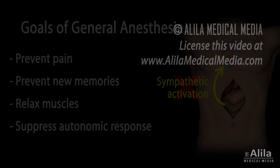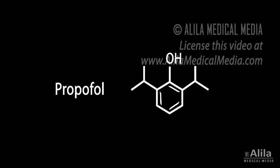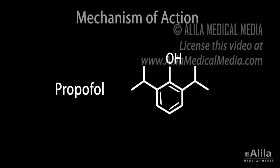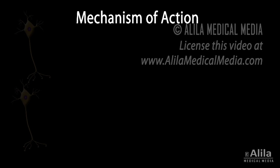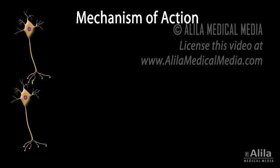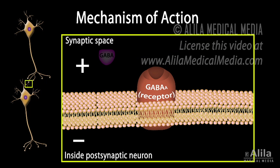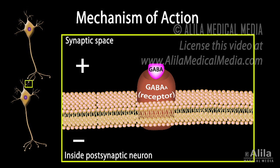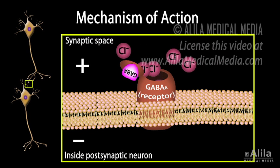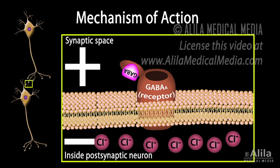An example of general anesthetic drugs is propofol. The exact mechanism of action of propofol remains unclear, but it is thought to inhibit responsiveness of neurons via its binding to GABA receptors. GABA is a major inhibitory neurotransmitter in the central nervous system. Upon binding, it triggers GABA receptors – ligand-gated chloride channels – to open and allow chloride ions to flow into the neuron.